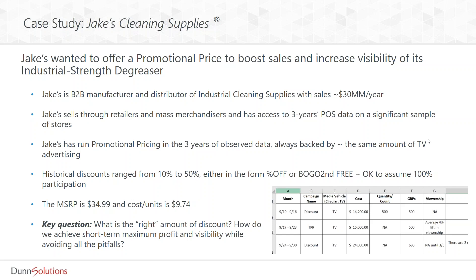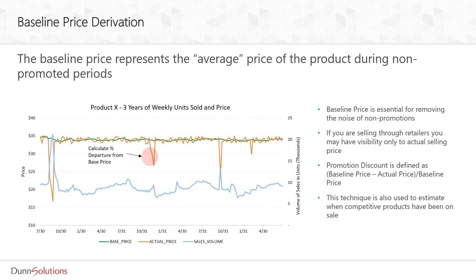So how did we proceed for this specific product and client? First, we needed to derive the discount. Because you are selling through retailers, you only have visibility to the actual selling price, not necessarily the regular retail price. So what we do is calculate a baseline price that represents the average price customers pay during non-promoted periods. The discount is simply the percentage difference between this baseline price and what consumers actually pay — the actual price. And if you also have competitive POS data, you can do the exact same thing for your competitors to get an estimate of when other brands were being promoted.